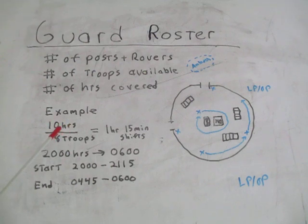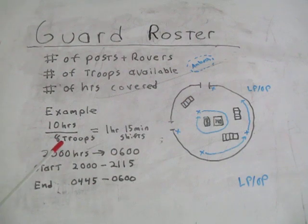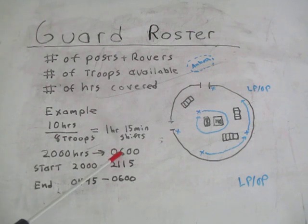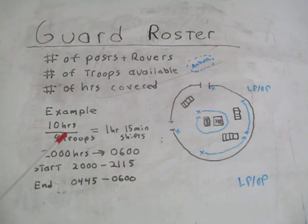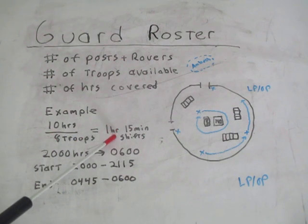Here's a simple example from an engineer squad. We're covering 10 hours of darkness during winter. The guard shift starts at 2000 hours and ends at 0600 when stand-to begins. With 8 troops available, 10 hours divided by 8 troops means each troop has a one hour and 15 minute shift.